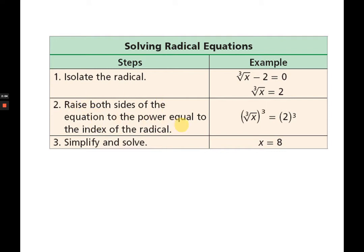Step 2: raise both sides of the equation to the power equal to the index of the radical. Since the given is a cube root, the opposite of cube root is cube. So to cancel out cube root, we raise it to cube. As a consequence, to maintain balance of the equation, we also cube both sides and simplify. Cube root is the opposite of cube, so they cancel each other, and you only have x. On the other side, you have 2 cubed: 2 times 2 times 2 equals 8. After simplifying, x is equal to 8.